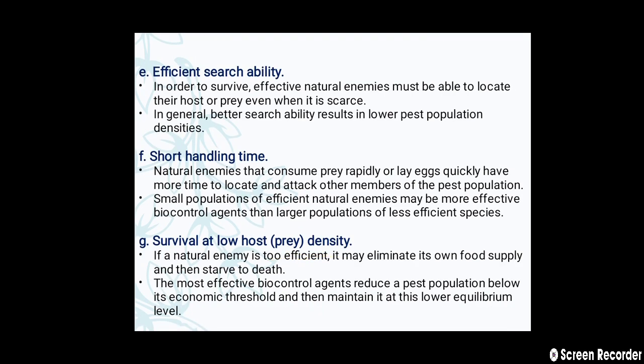The next characteristic is efficient search ability. In order to survive, effective natural enemies must be able to locate their host or prey even when it is scarce. In general, better search ability results in lower pest population densities. The next characteristic is short handling time. Natural enemies that consume prey rapidly or lay eggs quickly have more time to locate and attack other members of the pest population. A small population of efficient natural enemies may be more effective biocontrol agents than a larger population of less efficient species.